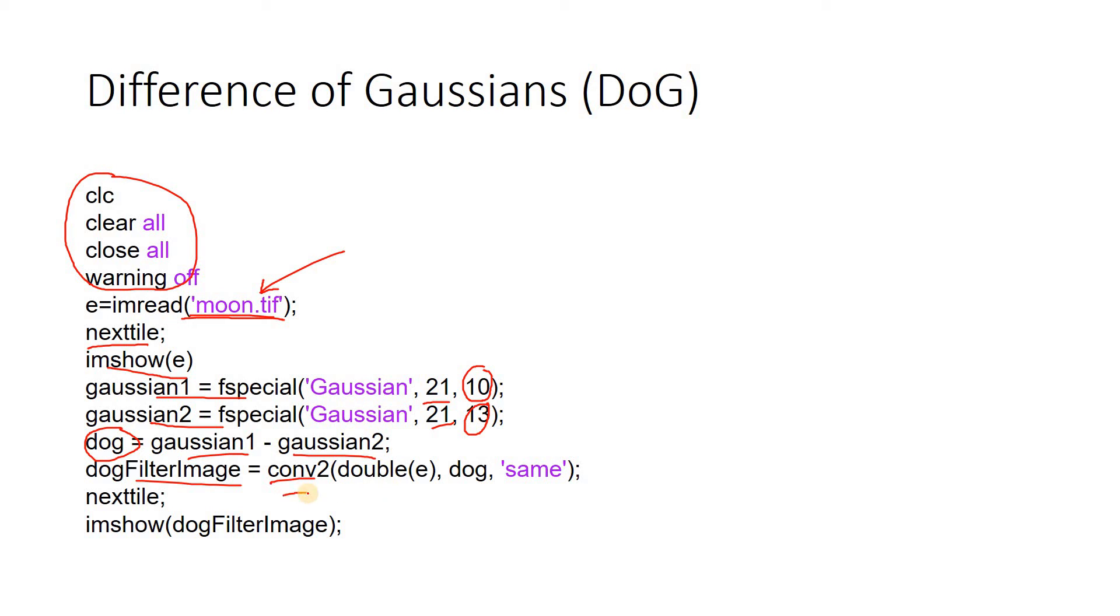Conv2 is a mathematical operation. So I have told you whenever you are applying mathematical operation, don't forget to convert the image from unsigned integer 8 to double. And then we are passing our kernel and same structure, that is the output should be having same structure. That's why we are passing 'same'. And then showing the DoG filter image. That's it.